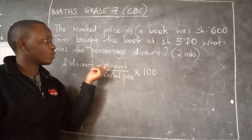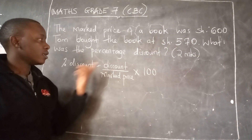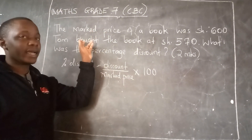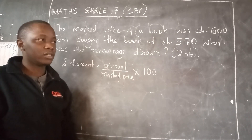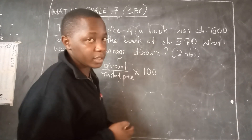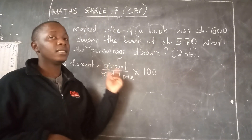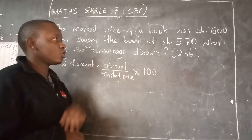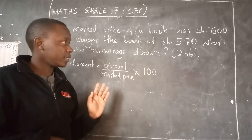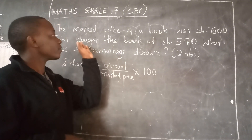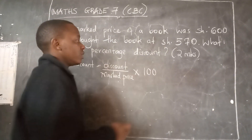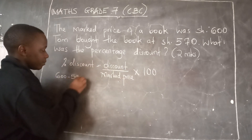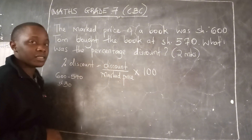Do we have the discount? No, we don't. So how can we find the discount? We can find the discount by subtracting the buying price from the marked price. The discount is given by: marked price minus the price at which the book was bought. So the discount is 600 minus 570, which gives us 30 shillings.